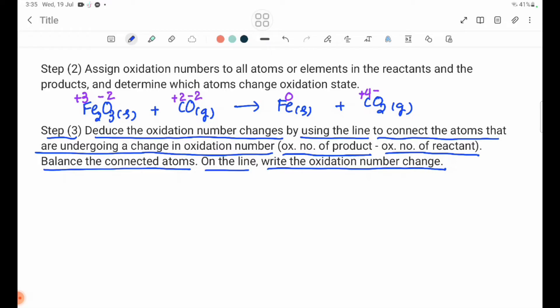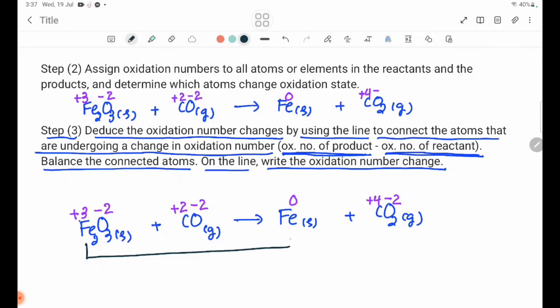Oxidation number of products minus oxidation number of reactant. Oxidation number of products F1 is plus 3 and is zero.